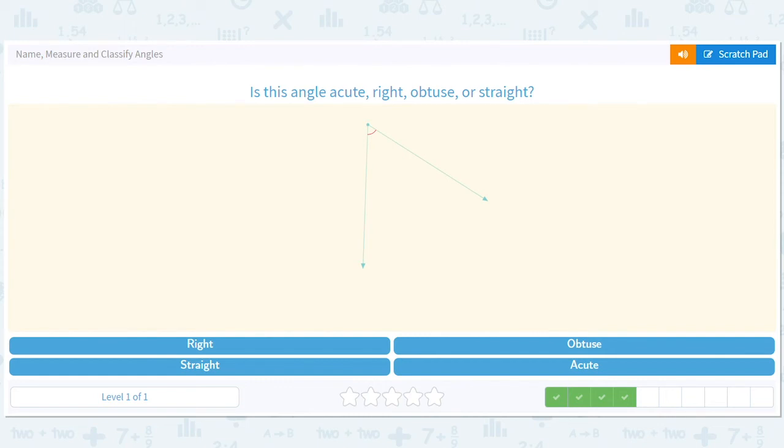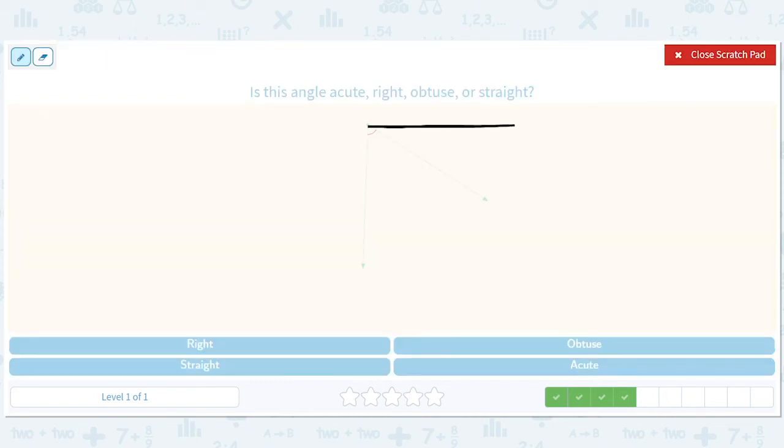Acute, right, obtuse, or straight. So if it were like this, it would be right. This is smaller than that. So it's acute. It's acute, small triangle. Acute, small angle.